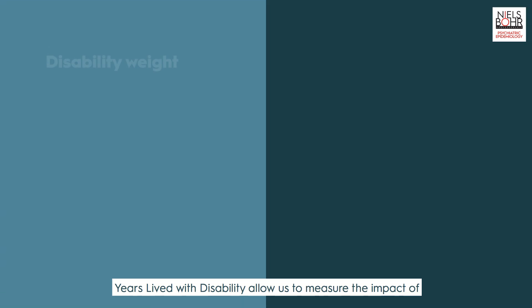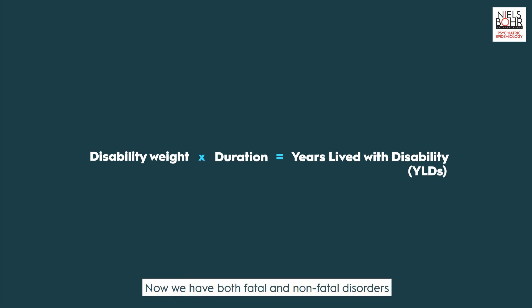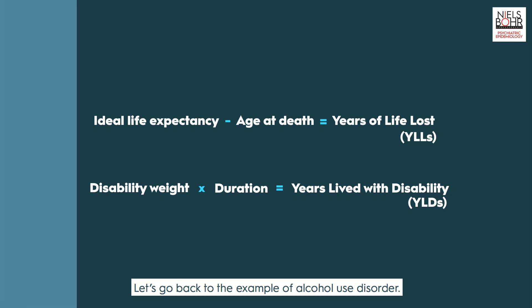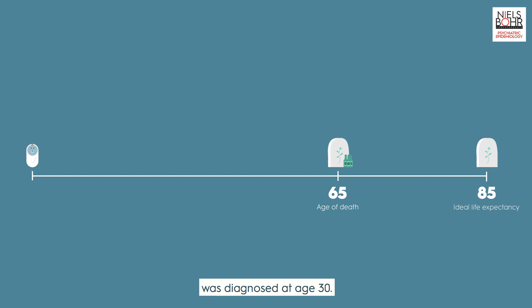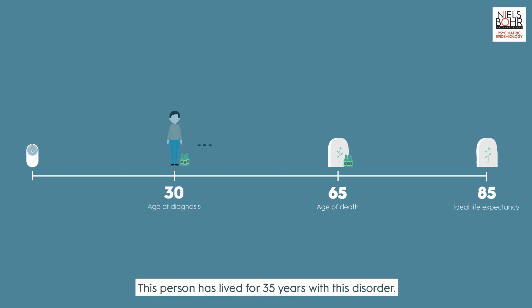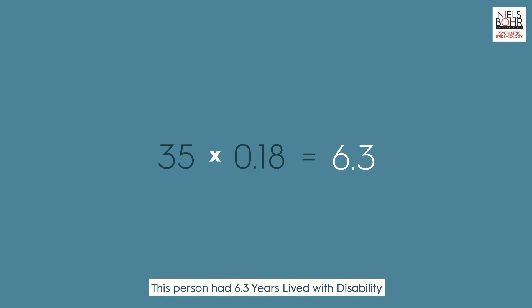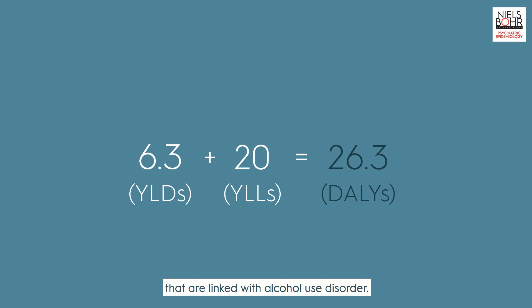Years lived with disability allow us to measure the impact of different types of non-fatal disorders on the same ruler. Now we have both fatal and non-fatal disorders measured in units of years. Let's go back to the example of alcohol use disorder. The person who died of alcohol use disorder at age 65 was diagnosed at age 30, having lived 35 years with this disorder. With a disability weight of 0.18, the total years lived with disability is 6.3 years. Combined with 20 years of life lost, this adds up to 26.3 disability adjusted life years linked with alcohol use disorder.